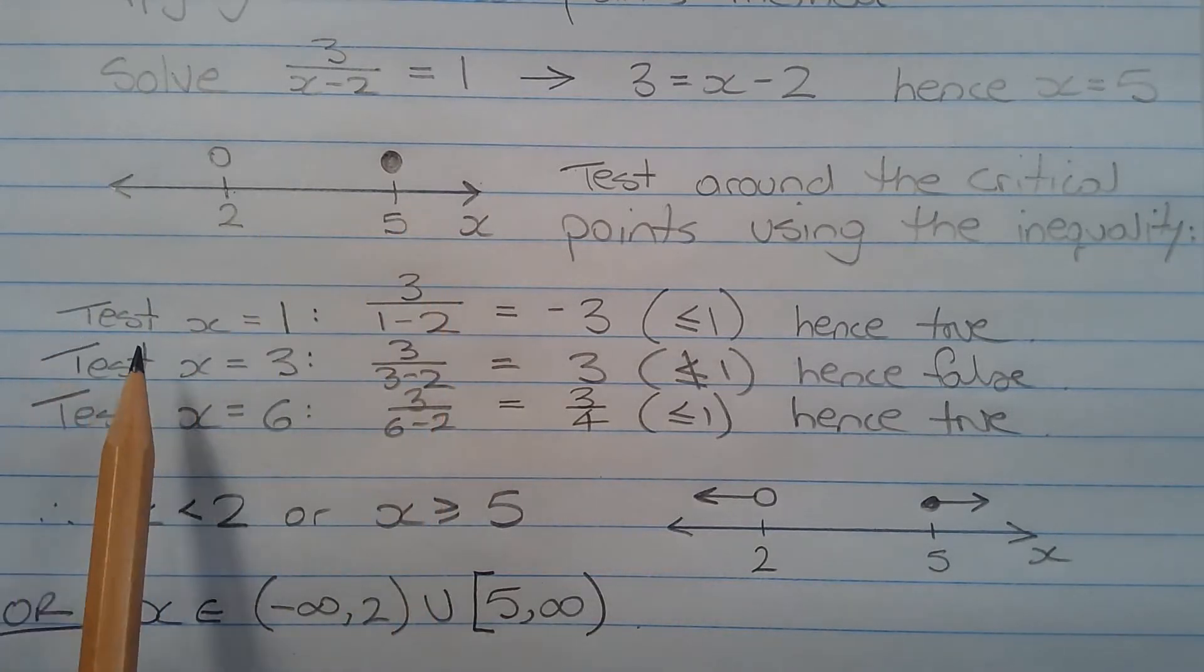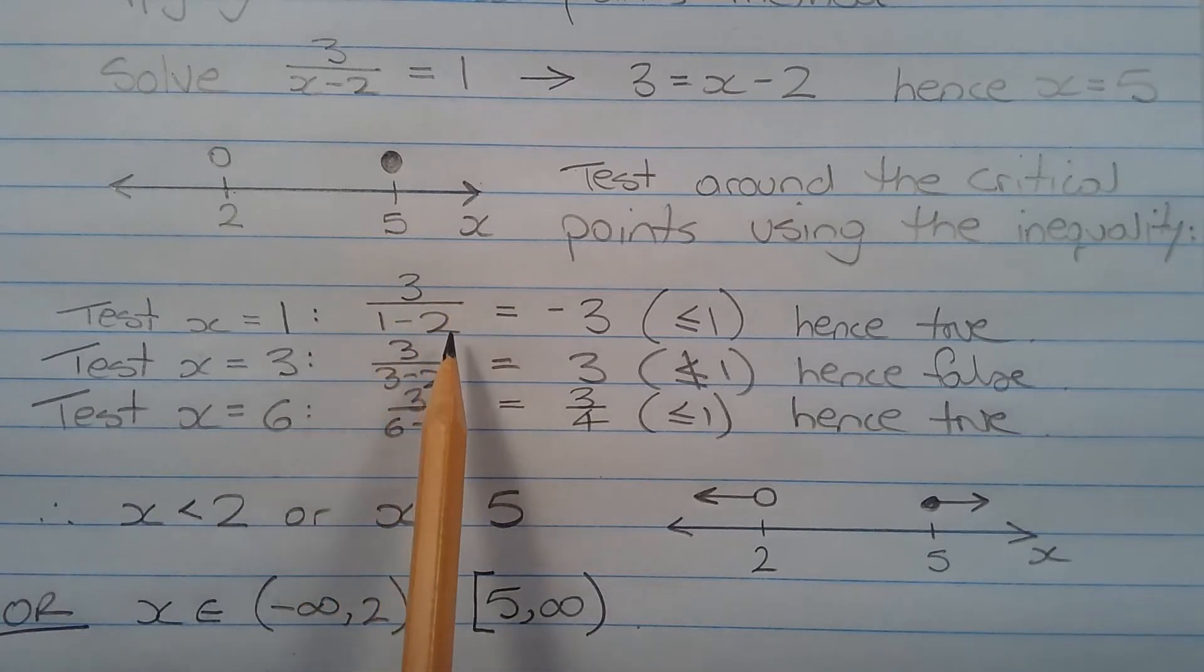Testing x equals 1: 3 over 1 minus 2 equals negative 3, which is less than or equal to 1, hence true.